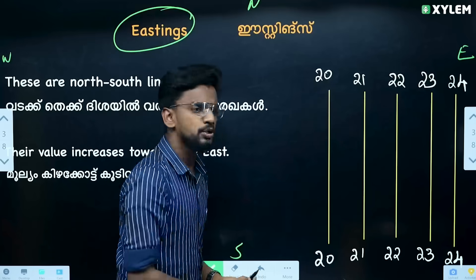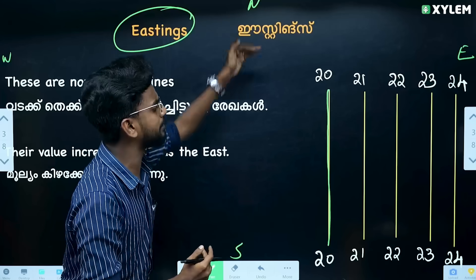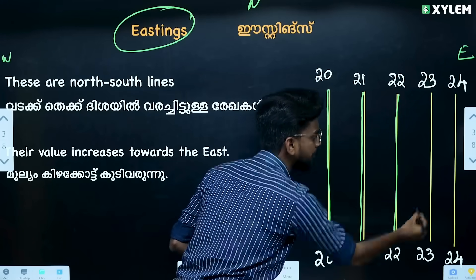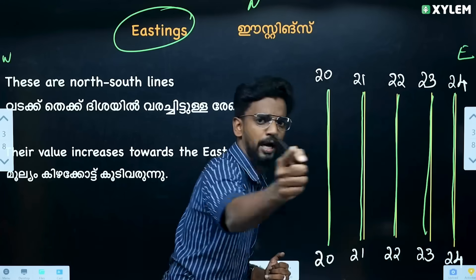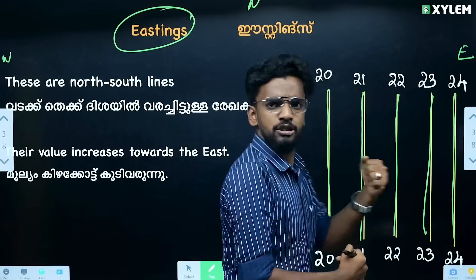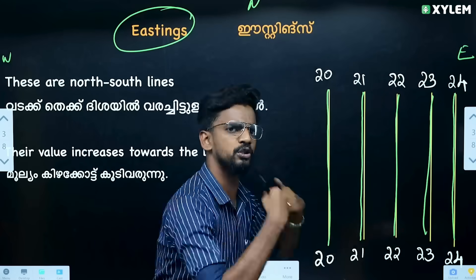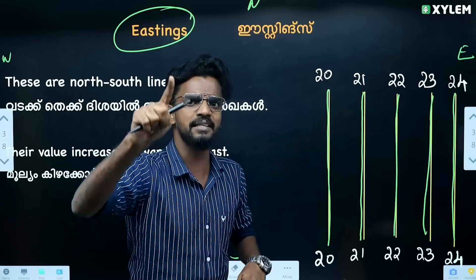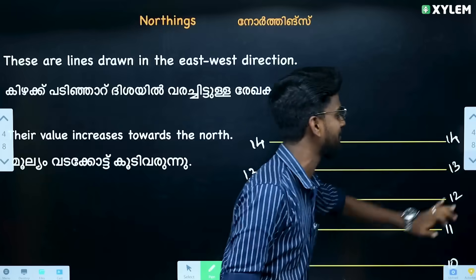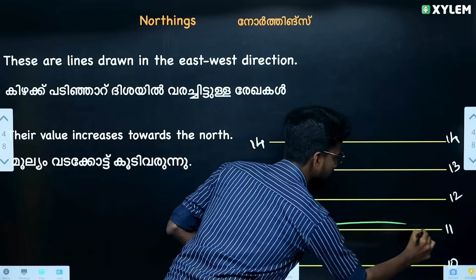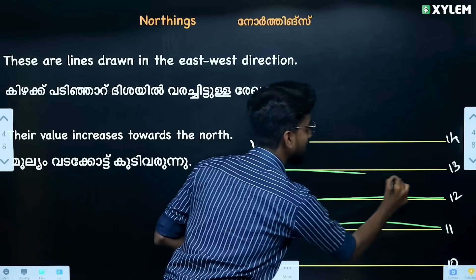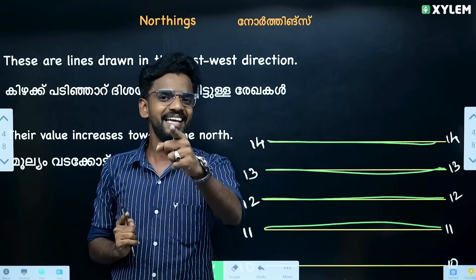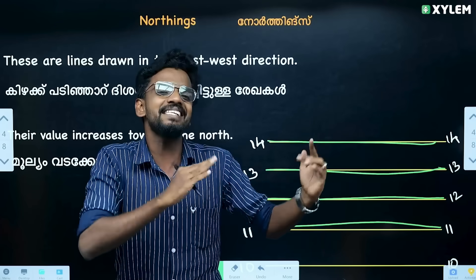Looking at the Eastings numbers: here is 20, 21, 22, 23, 24. East is going to be on the east side — those are the Easting values. Then for Northings, we go to the north side. The Northing numbers going north are 11, 12, 13.